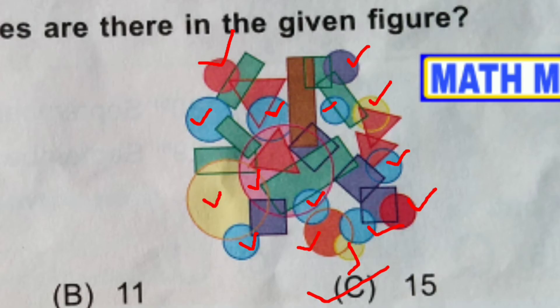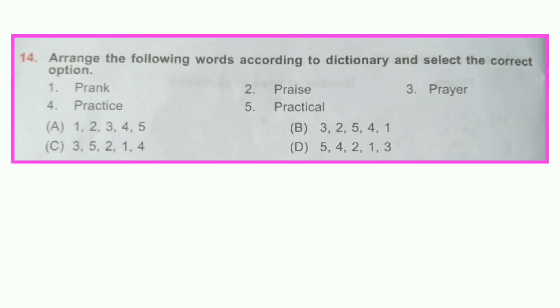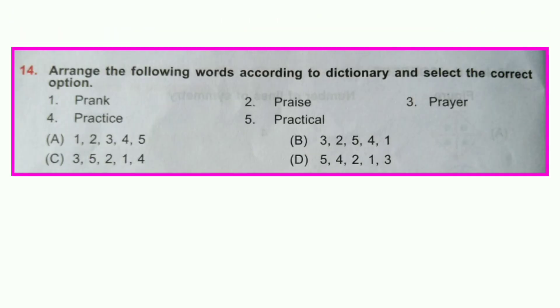Question number thirteen: How many circles are there in the given figure? Option C is correct — there are a total of 15 circles.